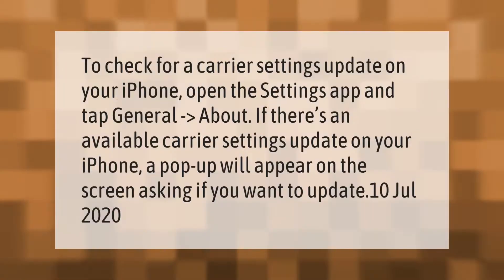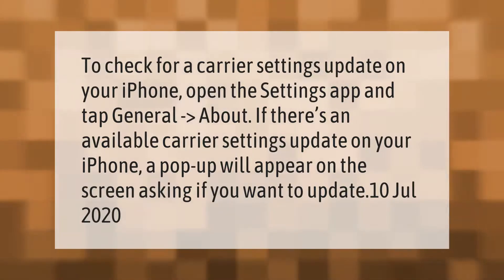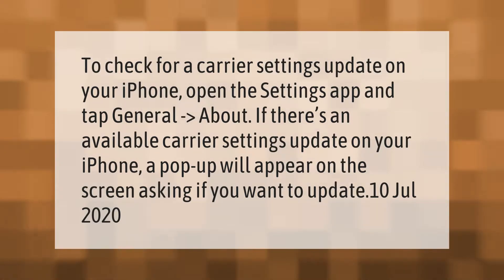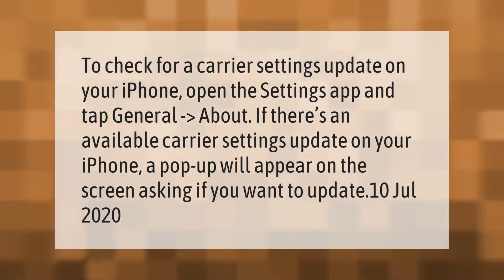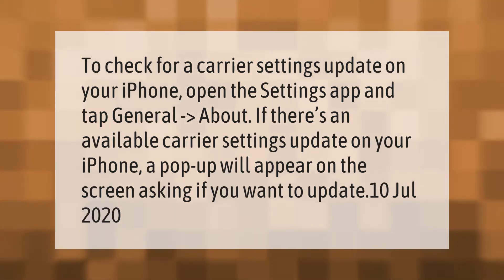To check for a carrier settings update on your iPhone, open the Settings app and tap General, then About. If there's an available carrier settings update on your iPhone, a pop-up will appear on the screen asking if you want to update.